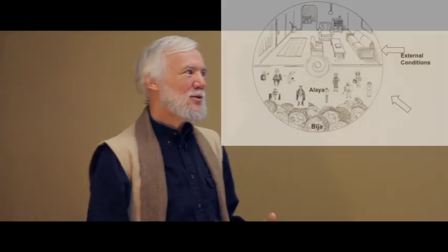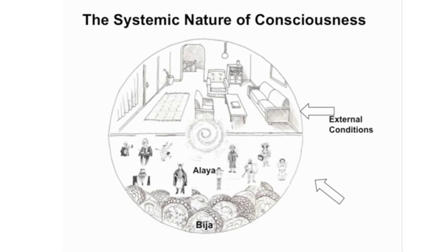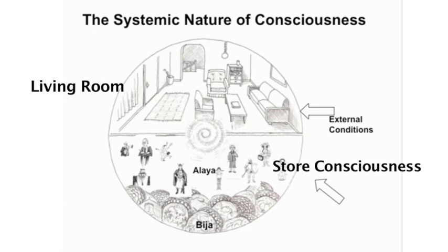He drew a circle with two halves, and he said that the bottom half is store consciousness, and the upper half is what he called everyday consciousness, or the living room of our consciousness, where we live every day in our life. In this store consciousness are all of the seeds of the potential states of mind that can arise into the foreground of our consciousness — the state of mind that's present right now.